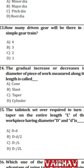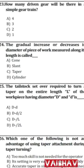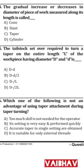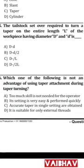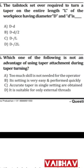Question 24: The gradual increase or decrease in diameter of a workpiece measured along its length is called taper. The total increase in diameter between two points of a workpiece having taper T and length L gives the formula: tailstock offset = (D minus d) divided by 2. Question 25 answer is B.